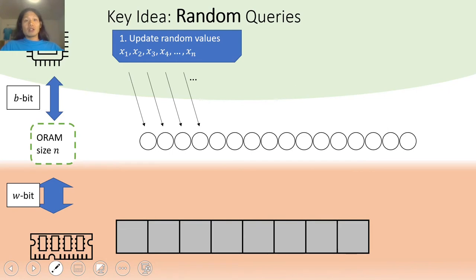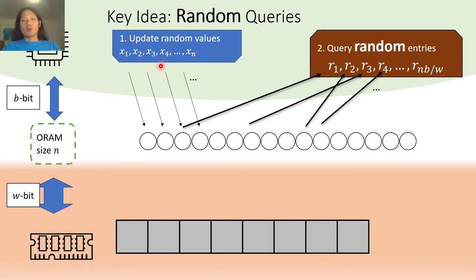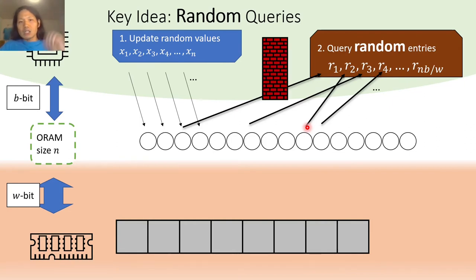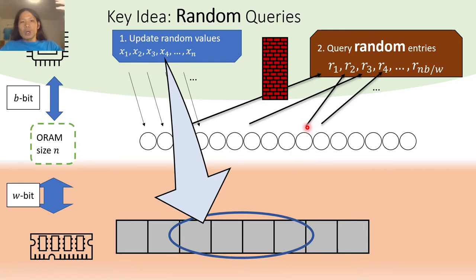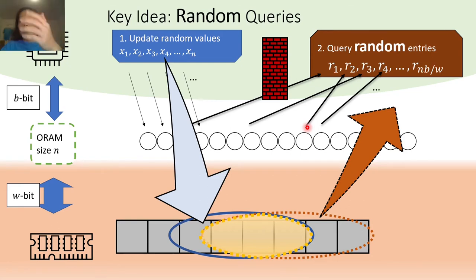To address this, our key idea is to use an even harder sequence of operations. We use the same update sequence as before, but now we query random entries in the whole array. That means for every query, we pick a uniformly random entry in the whole array and query it. There is still an imaginary wall between the two phases. Before the wall, the ORAM has to write down the long random stream in the blue set of cells, and then later in the query phase, the ORAM has to read memory cells in order to correctly answer the random queries.